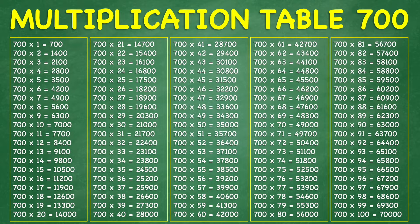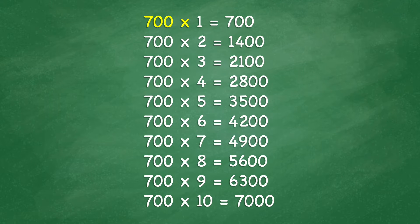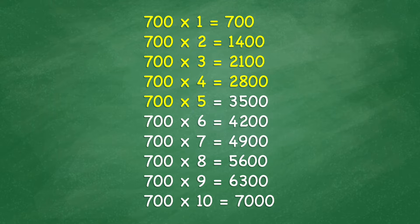Multiplication Table 700. 700 times 1 equals 700. 700 times 2 equals 1,400. 700 times 3 equals 2,100. 700 times 4 equals 2,800. 700 times 5 equals 3,500. 700 times 6 equals 4,200. 700 times 7 equals 4,900. 700 times 8 equals 5,600.